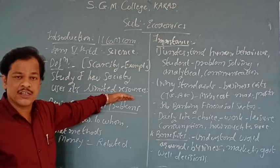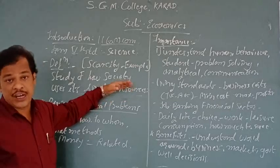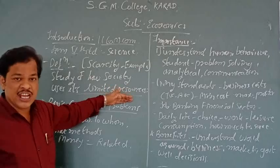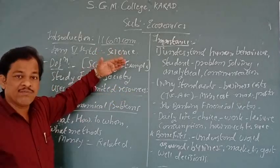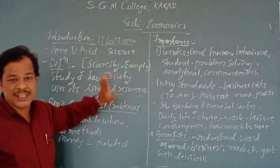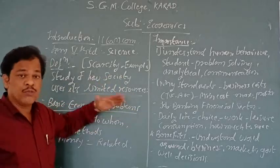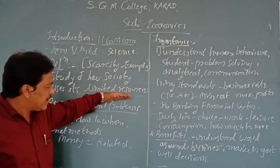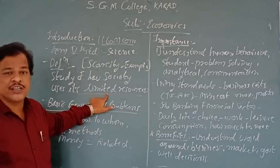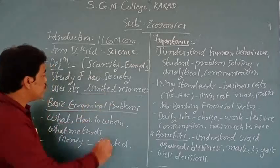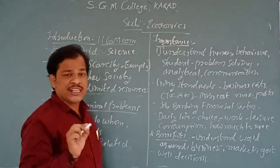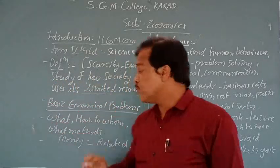Stage number one is the upper class — very rich people: your cricketers, players, industrialists, businessmen. Stage number two is we all — middle class people. And stage number three is about the BPL, below poverty line. So there is some kind of difference in income. Resources are limited. Economics is the science which tells us something about limited resources — how you are going to use them.